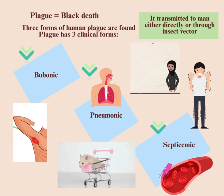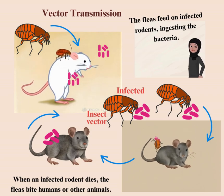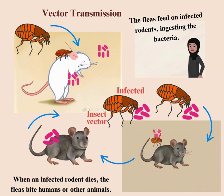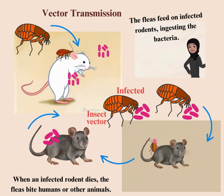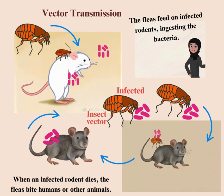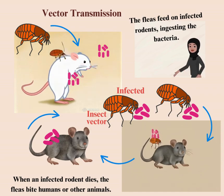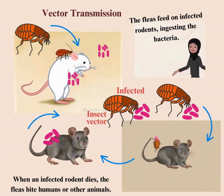Mode of transmission: it is transmitted to man either directly or through an insect vector. Urban rodents, particularly rats, serve as the primary reservoir hosts for the plague bacterium Yersinia pestis. These rodents live in close proximity to humans, especially in areas with poor waste management and overcrowding. Fleas — Xenopsylla cheopis — act as the primary vectors. They feed on infected rodents, ingesting the bacteria.